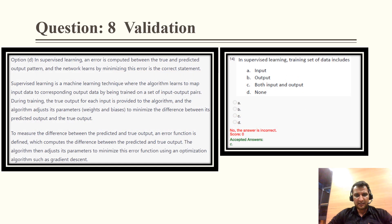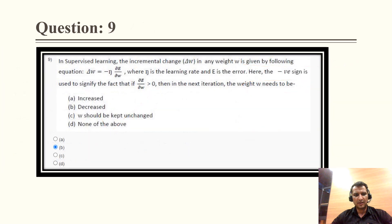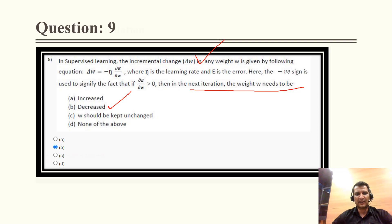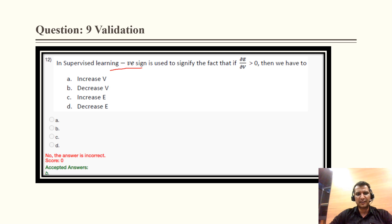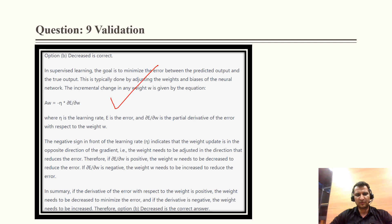This is further validated by a previous year question: in supervised learning, the training data set includes both input and output. Question 9: in supervised learning, the incremental change DW in any weight W is given by a formula, and in the next iteration the weight W needs to be decreased. The negative sign is used to signify that we have to decrease the weight. The correct option is B: decrease.